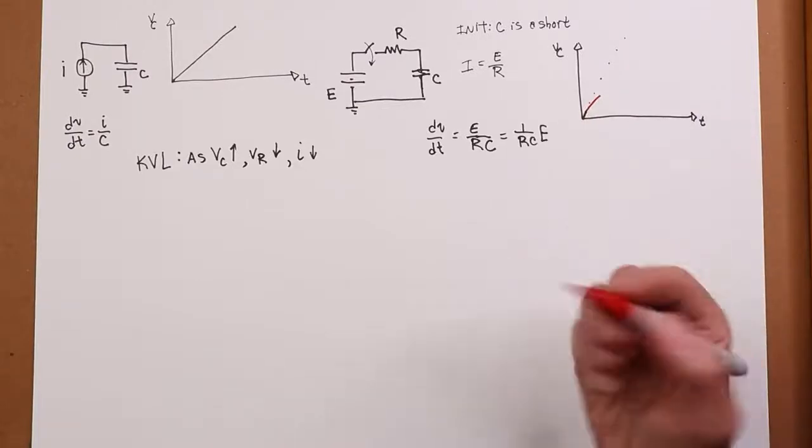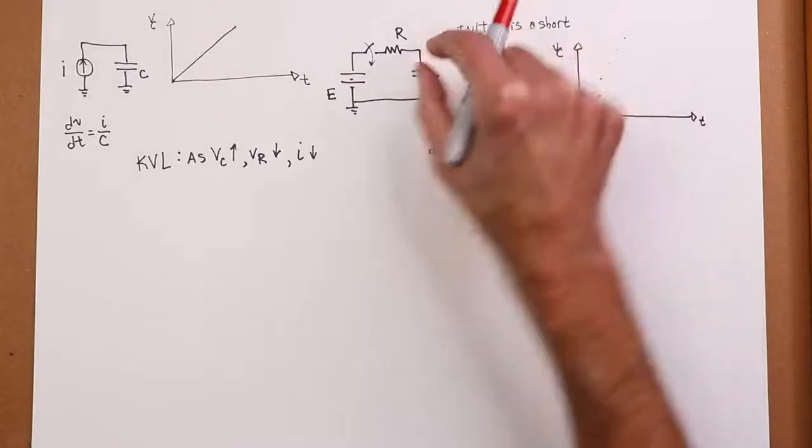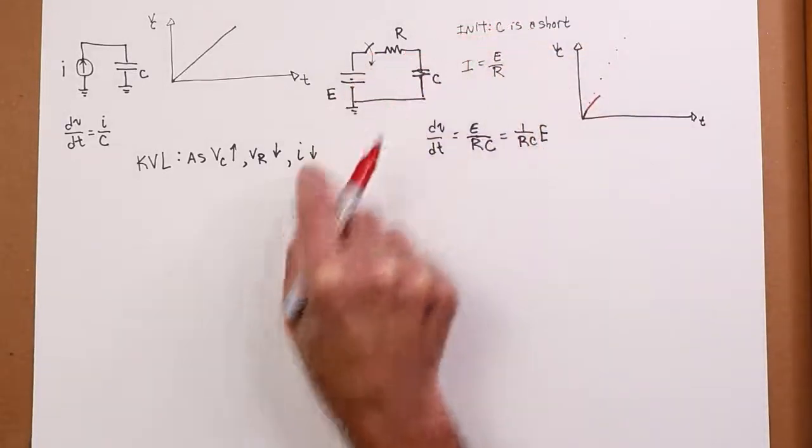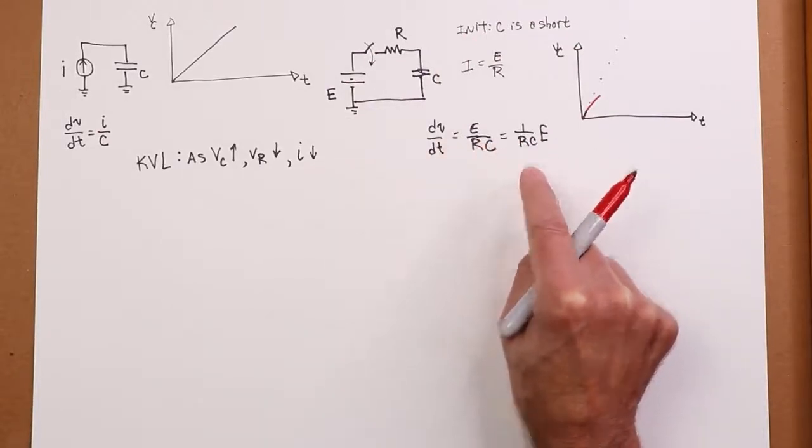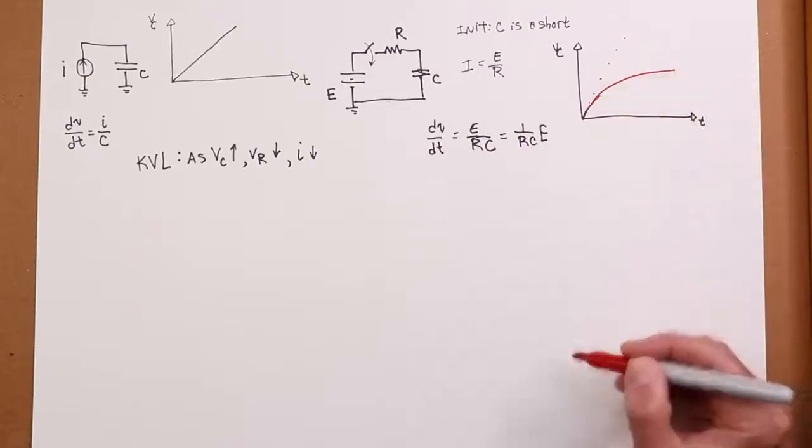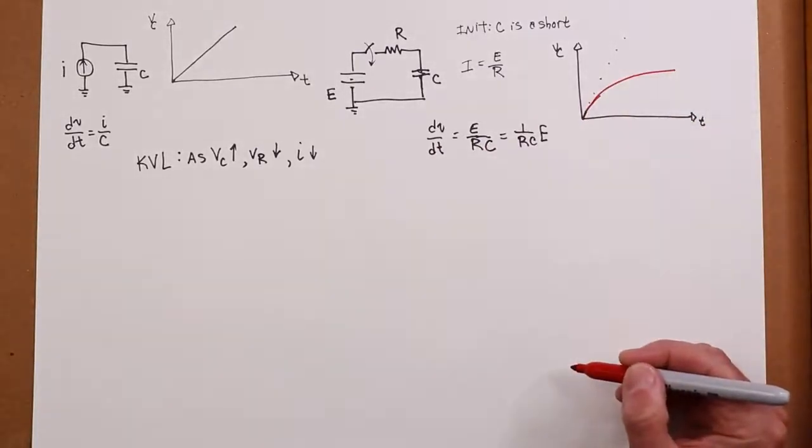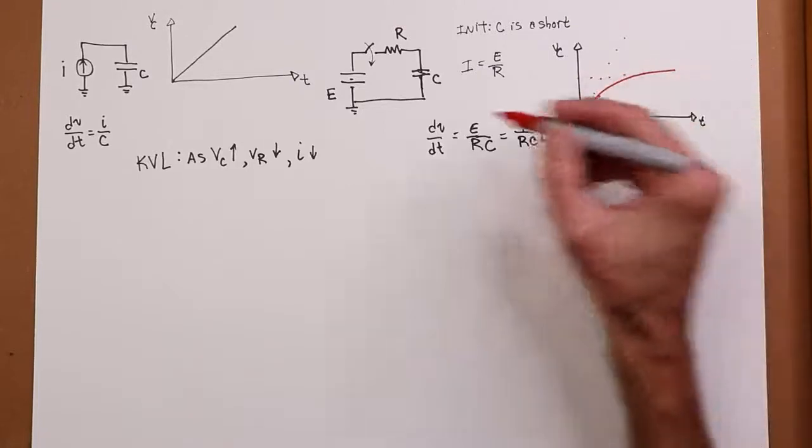And this process just keeps on going, because the more voltage we develop across the capacitor, the less there is for the resistor, the smaller the current will be, and therefore the smaller the rate of change. So essentially, this thing will eventually just sort of flatten out.